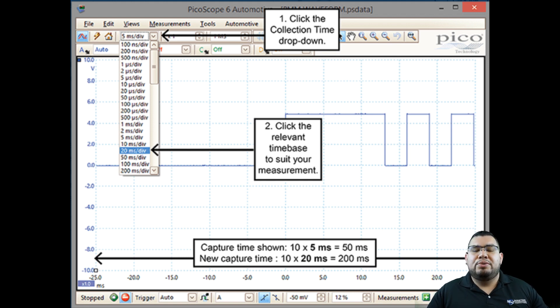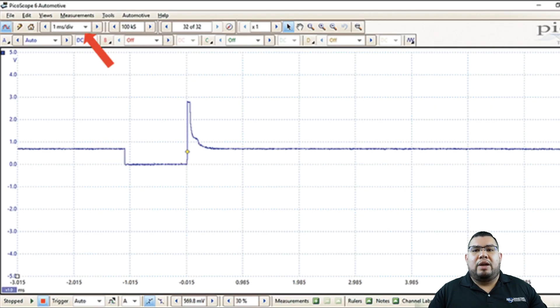One thing you want to pay attention to is a lot of technicians I've noticed when they start using a scope, they go into a really short time on their scope. What that's going to lead to is going to give you a more defined trace. However, you're not going to be able to see dropouts, glitches, shorts or anything within your trace because you're seeing it very relative.